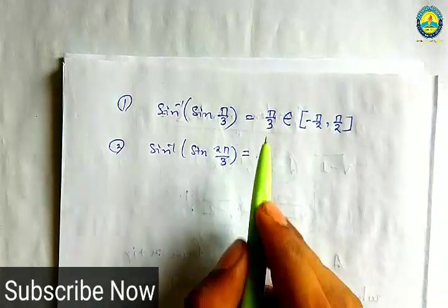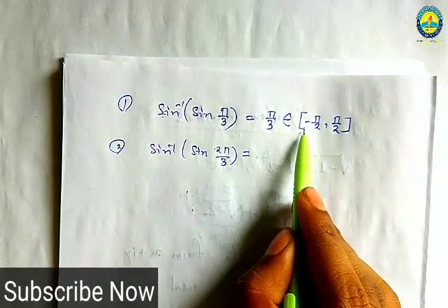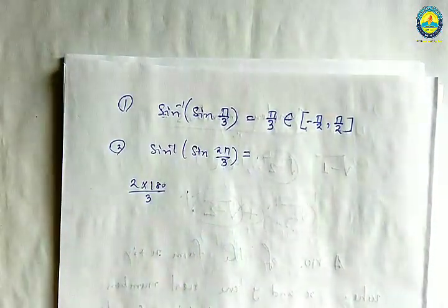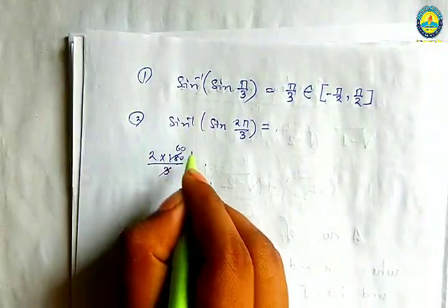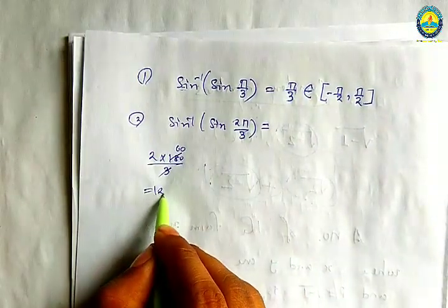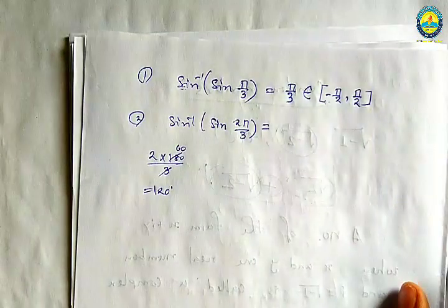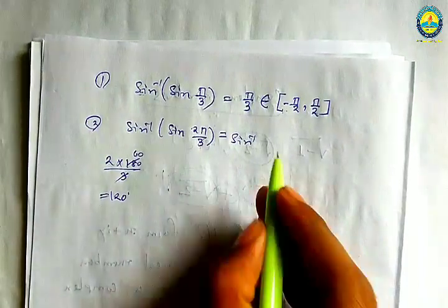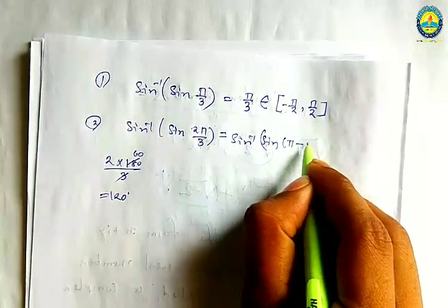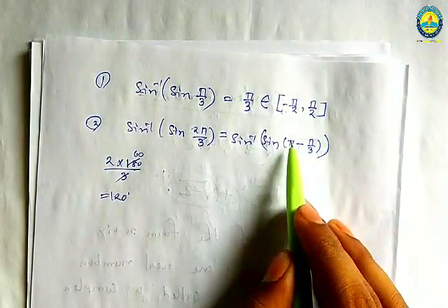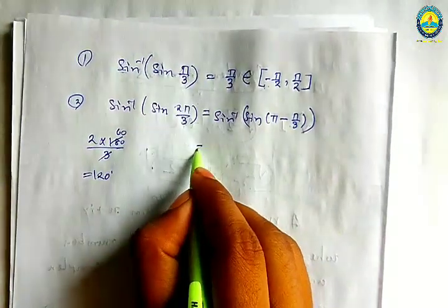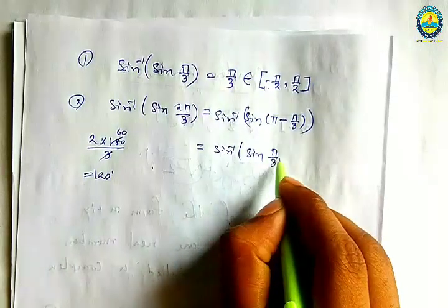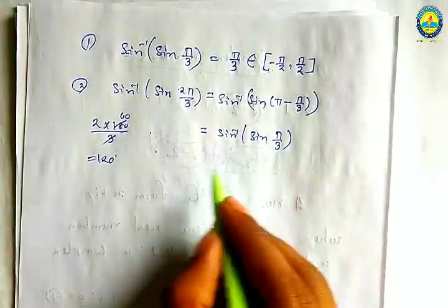Next, number two: 2 pi by 3. Check: 2 pi by 3 is not in the range minus pi/2 to plus pi/2. Sin(2 pi by 3) = sin(pi minus pi by 3). So sin inverse sin(2 pi by 3) = pi minus pi by 3 = pi by 3.